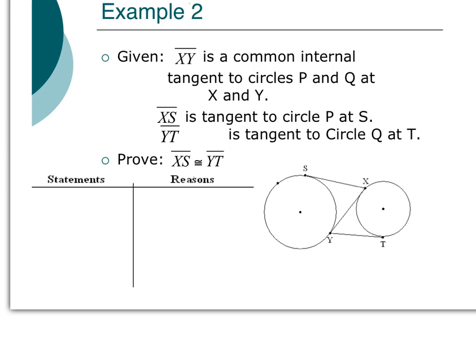It's proof time. We're given that XY is a common internal tangent to circles P and Q, and it's tangent at X and Y. We're also given that XS is tangent to circle P at point S, and YT is tangent to circle Q at T. And we want to prove that XS is congruent to YT. I'm going to write that in blue. I want to prove that these two are congruent.